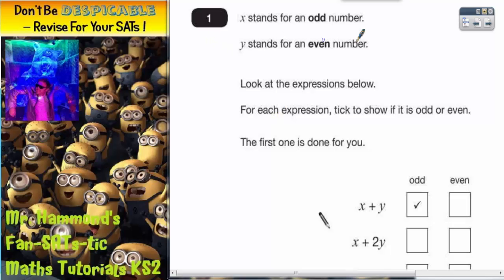Question 1. x stands for an odd number, y stands for an even number. It says, look at the expressions below. For each expression, tick to show if it is odd or even. The first one is done for you.